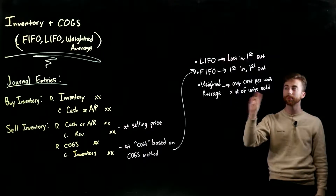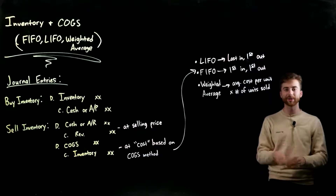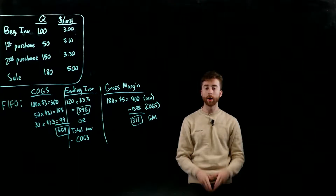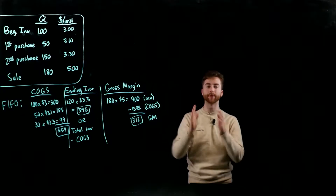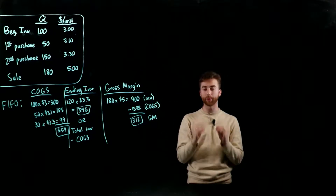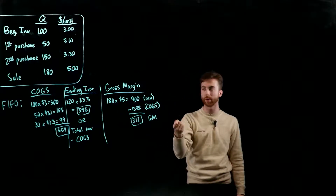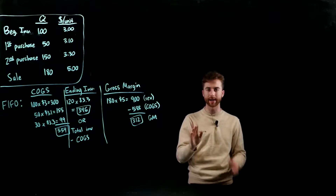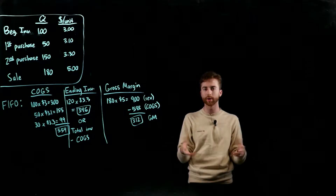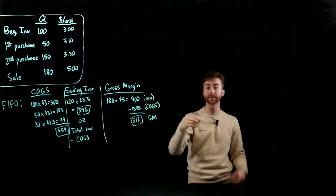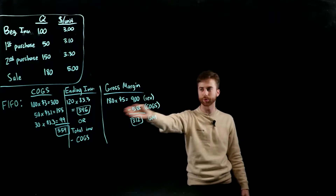The weighted average method accounts for the likely difference in what we paid for all units of inventory by computing an average cost per unit, then multiplying by units sold to get cost of goods sold. We'll go through one example using the same data for FIFO, LIFO, and weighted average, finding cost of goods sold, ending inventory, and gross margin. Gross margin is simply revenue minus cost of goods sold.